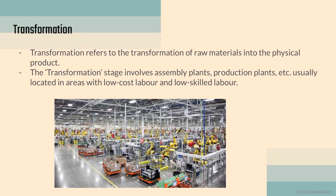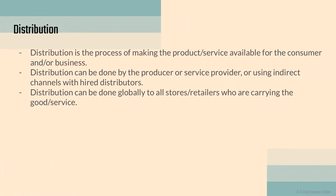Transformation is where we take it to the next level — we are transforming what was originally a basic raw material into something that has had value added. Transformation refers to the transformation of raw materials into a physical, tangible product. This stage usually involves assembly plants and production plants, using areas with low-cost, low-skilled labor, because TNCs are the main stakeholders in a GPN and want to minimize labor costs.